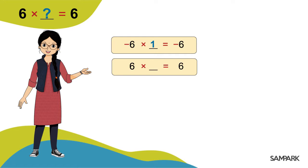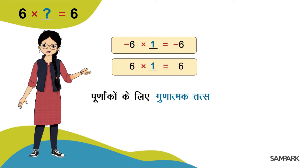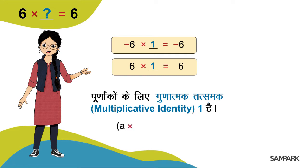किसी भी पूनांक को एक से गुना करने पर वही पूनांक मिलता है। यानी एक गुना ए बराबर ए होता है। इस प्रकार पूनांकों के लिए गुनात्मक तत्समक हुआ एक।